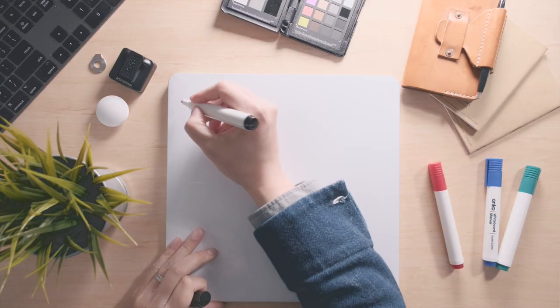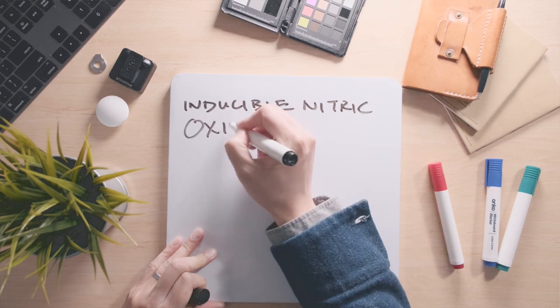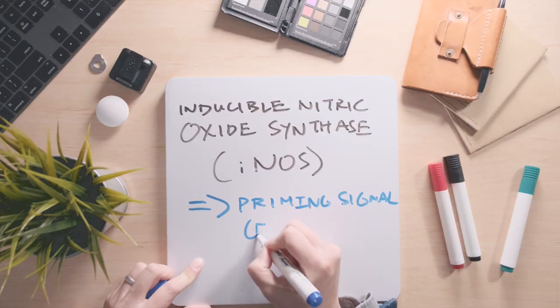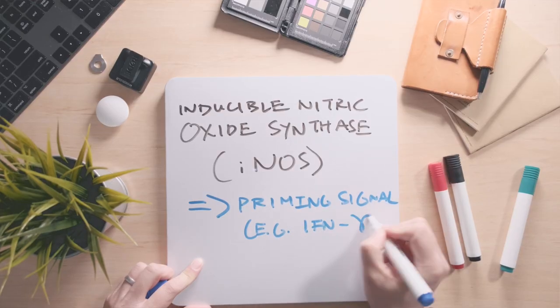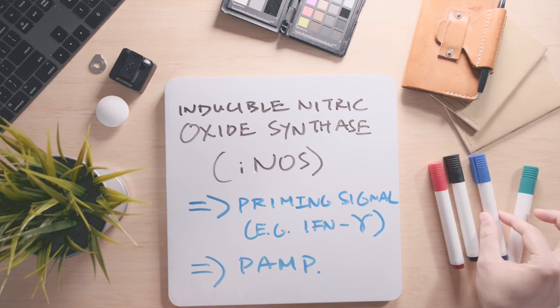Nitric oxide is synthesized through the enzyme inducible nitric oxide synthase, or iNOS. iNOS is not always present in macrophages and its expression requires two signals: a priming signal and a triggering signal from a PAMP.